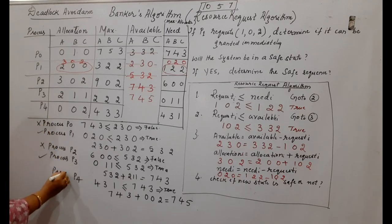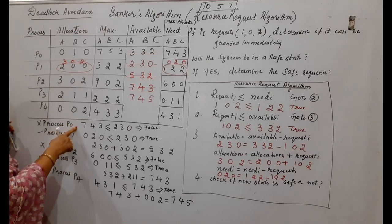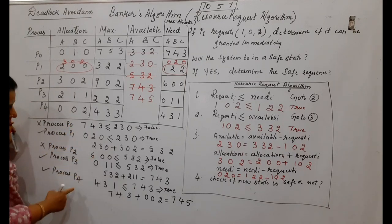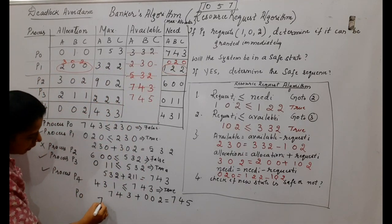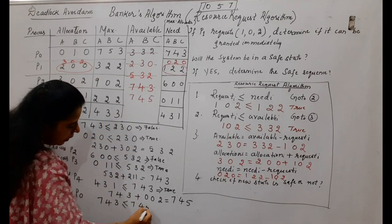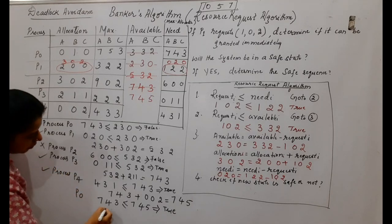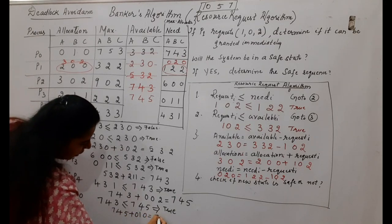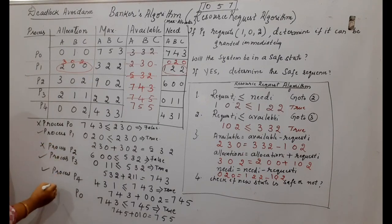P4 has completed. Now revisit P0 and P2 which could not complete earlier. Starting with P0: its need is 7,4,3 — is it ≤ available 7,4,5? Yes, it is true. P0 completes and releases its allocation 0,1,0. New available: 7,4,5 plus 0,1,0 equals 7,5,5. P0 has completed.